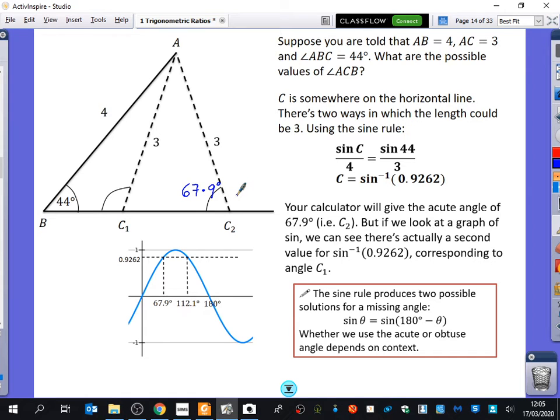But if we look at a graph of sine, we can see that there's actually a second value for this which corresponds to this value that you have over here. So I'm just going to talk about this graph that we've got here for a second to show you the two places where it can happen. The sine graph starts here and it goes up and then down and then up and then down. I'm sure you're familiar with that from GCSE.